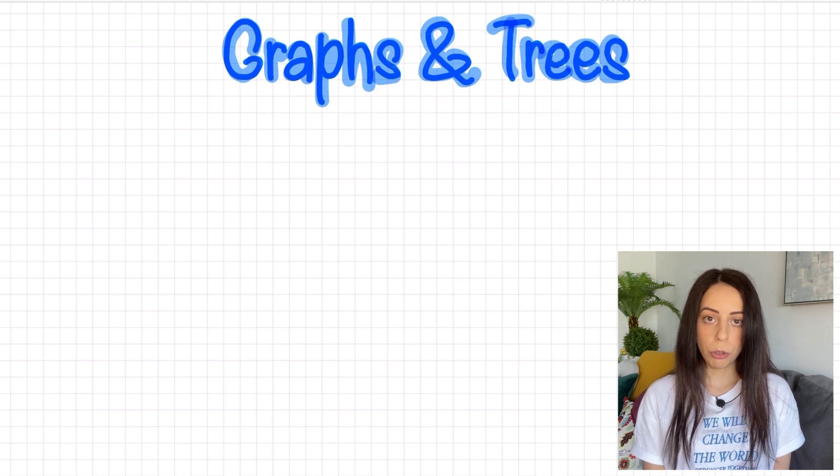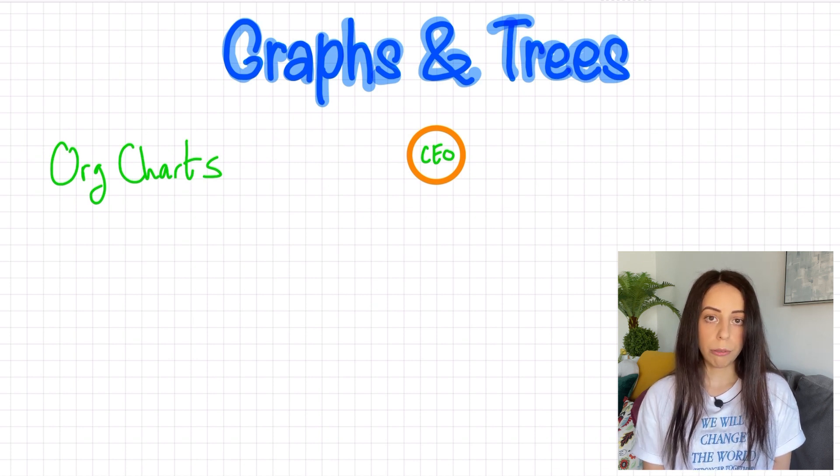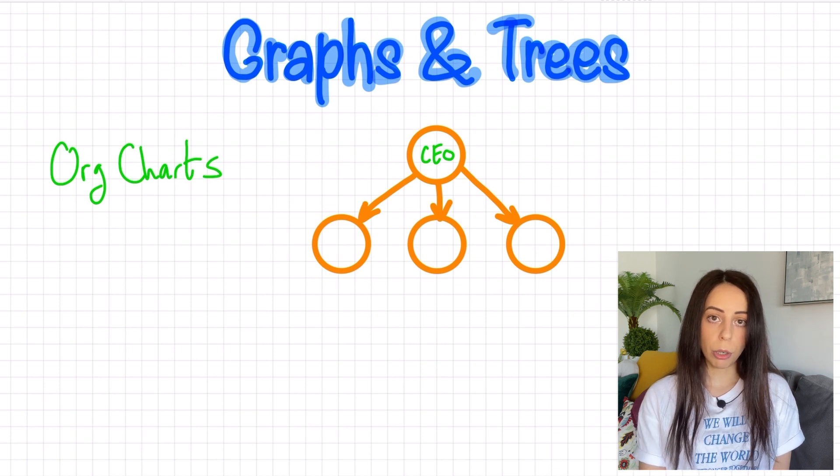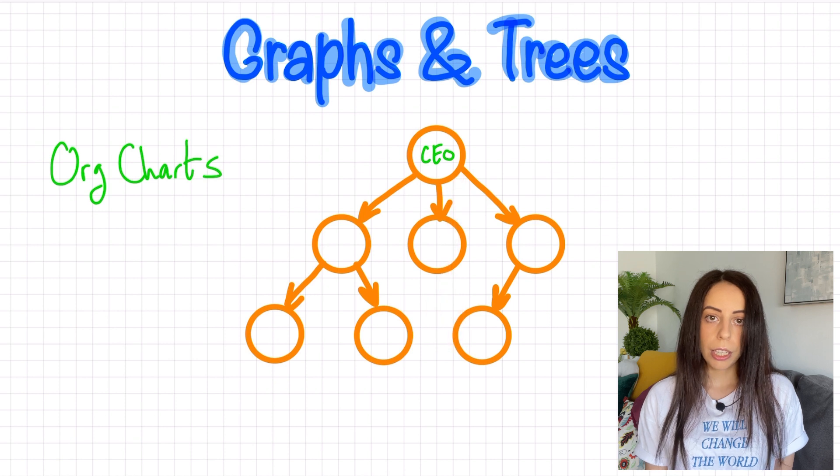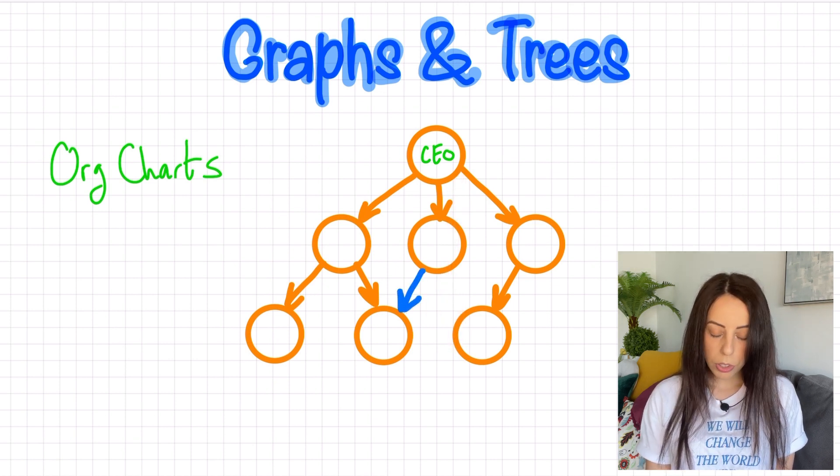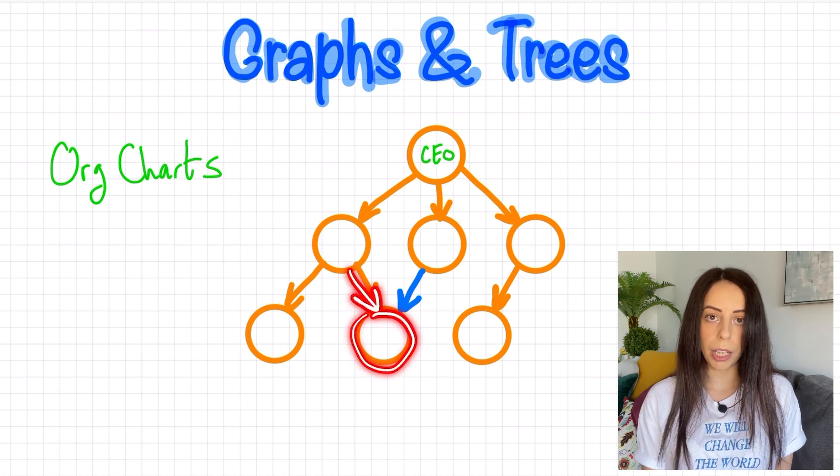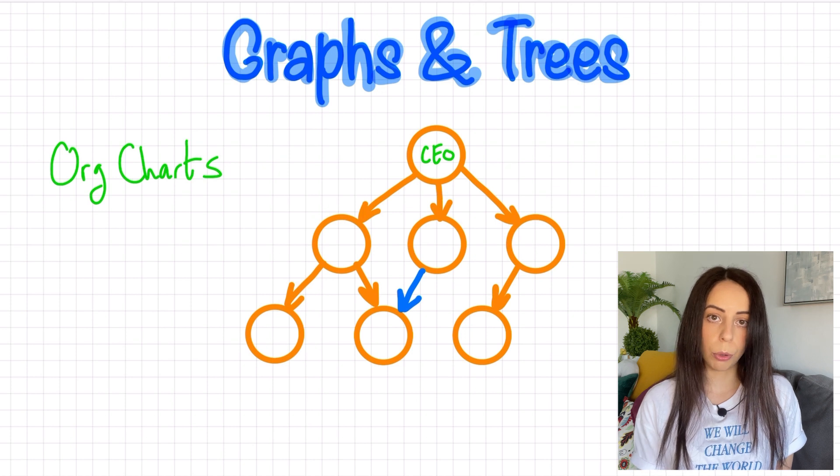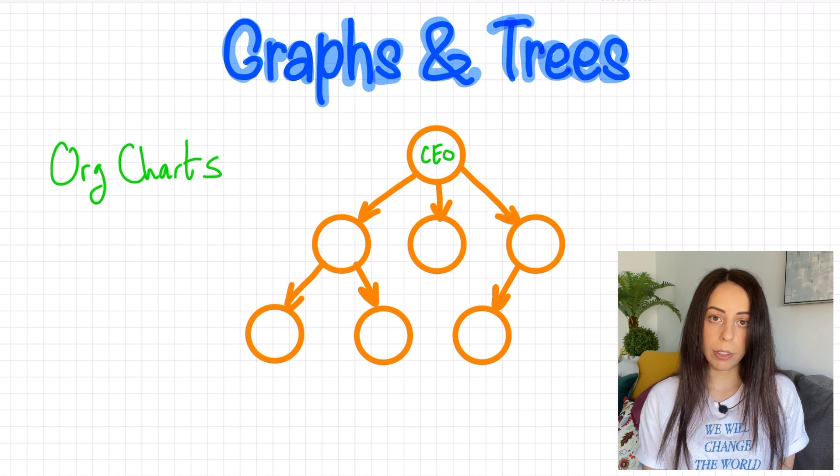Another specific type of graph is a tree. An easy way to understand trees is to think of org charts. Every organization has one CEO and that will be the root of the tree. The CEO would have some number of direct reports, and then each of them may have their own direct reports and so on. So everything flows in one direction. Now, what if I also add this edge? Well, this is no longer a tree because a node in a tree can only have one incoming edge. But instead of memorizing rules, just think of the org chart example. An employee cannot have two direct managers, right? So this org chart will not make sense.